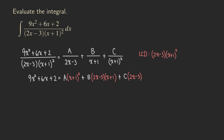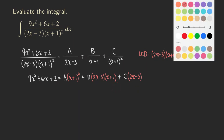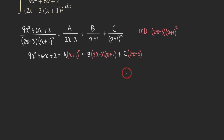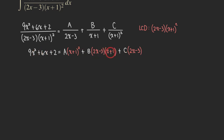So now what do we do? We can use a strategy. One way is to multiply out and then try to match the coefficients. Another way is to plug in some x values so that some terms will disappear. For example, if we plug in x equals 3 over 2, then the terms with the 2x minus 3 factor equal 0 and only the A term is left.